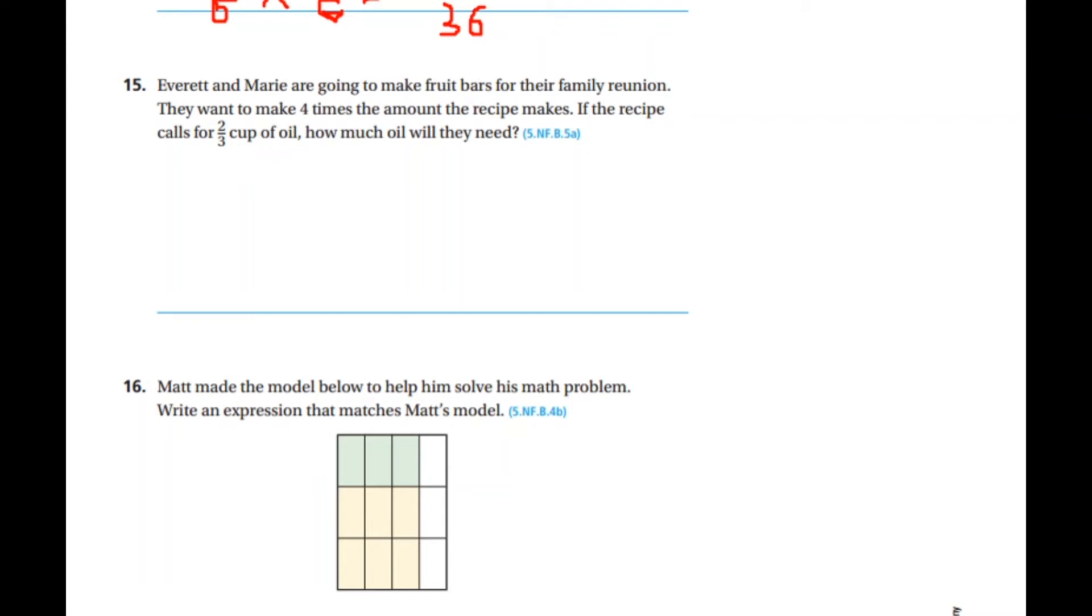Everett and Mary are going to make fruit bars for their family reunion. They want to make four times the amount the recipe makes. If the recipe calls for two-thirds cup of oil and they need four times that amount.